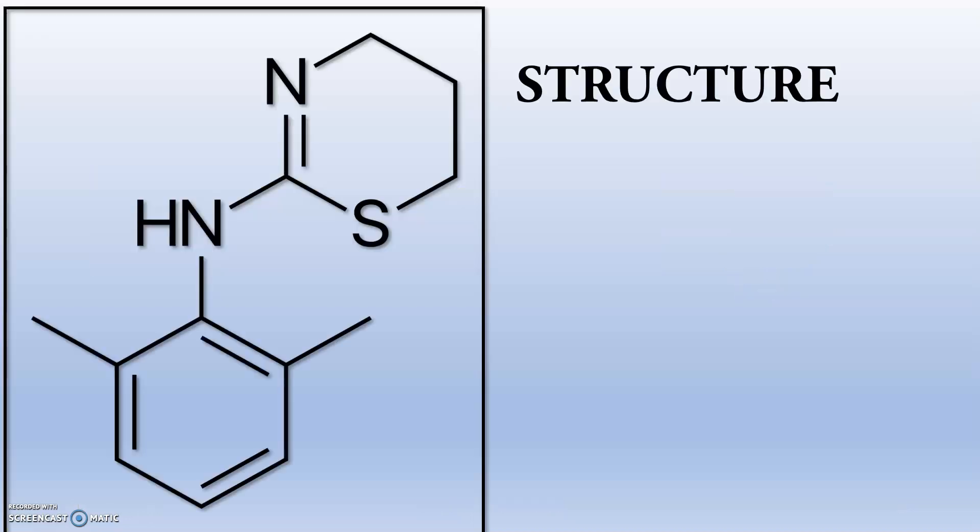This is the chemical structure of Xylacine. You can see there is a benzene ring and another ring attached to the benzene ring.